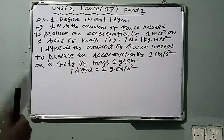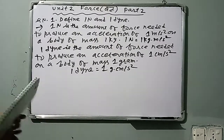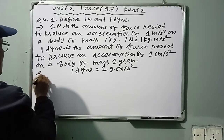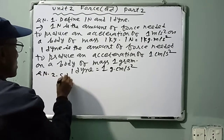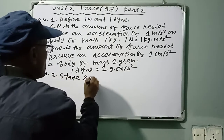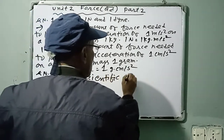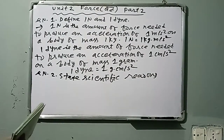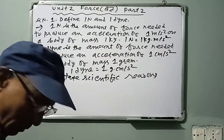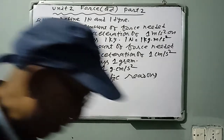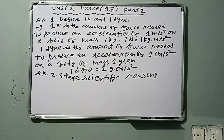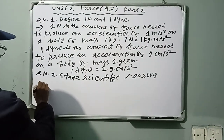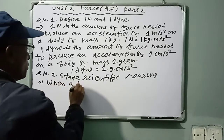See, that's the definition. Now, question number two: state scientific reasons. These questions are related to Newton's laws of motion — Newton's first law, second law, and third law. State scientific reason number one: a bullet is fired from a gun or rifle.